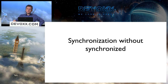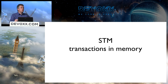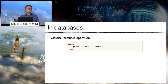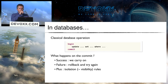How can I synchronize operations without using synchronized operations? There are at least two solutions. The first is called STM — Software Transactional Memory — which deals with transactions in memory. Consider SQL: databases have been handling concurrency with transactions for years. On a commit, if successful we continue; on failure we roll back and try again. We also get isolation, which provides very precise visibility rules.